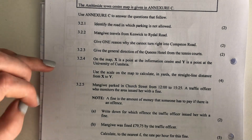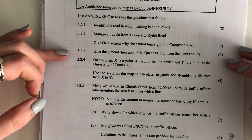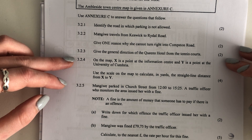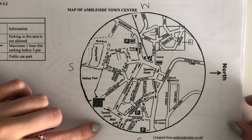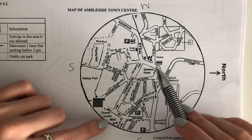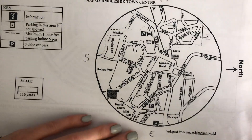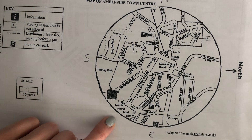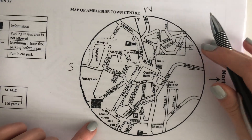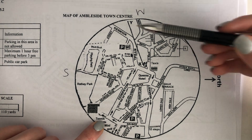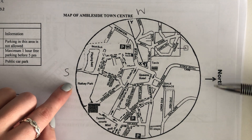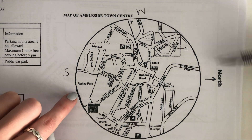All of these have been interpretation up until now, and now we get our direction question, which we knew was coming. Give the general direction of the Queen's Hotel from the tennis courts. The most important thing is to find where these things are. Here's the tennis courts and the Queen's Hotel is here. It says the direction of Queen's Hotel from the tennis courts, so it means I'm standing at the tennis courts looking towards the Queen's Hotel. We know that from the tennis courts to the Queen's Hotel is going to be northwest. We always say our dominant cardinal point — north or south — followed by our less dominant point. So it would be northwest. You can write it as NW or northwest — either are accepted.